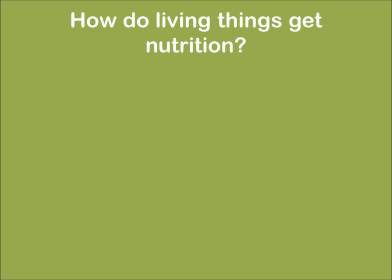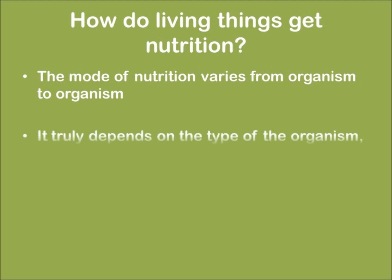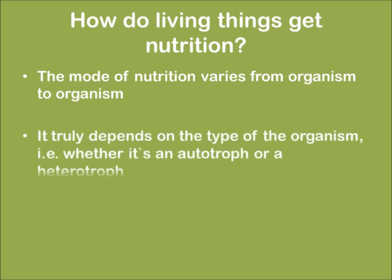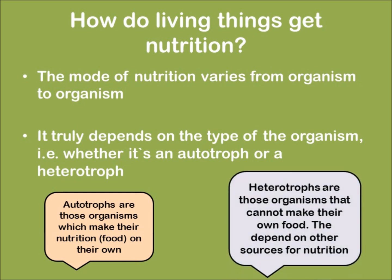The question is: how do living things get nutrition? The mode of nutrition varies from organism to organism. It truly depends on the type of organism — that is, whether the organism is an autotroph or a heterotroph. Autotrophs are those organisms which can prepare their own food, for example, plants. Whereas heterotrophs are those organisms that cannot make their own food; they have to depend on other sources for nutrition, for example, us humans.